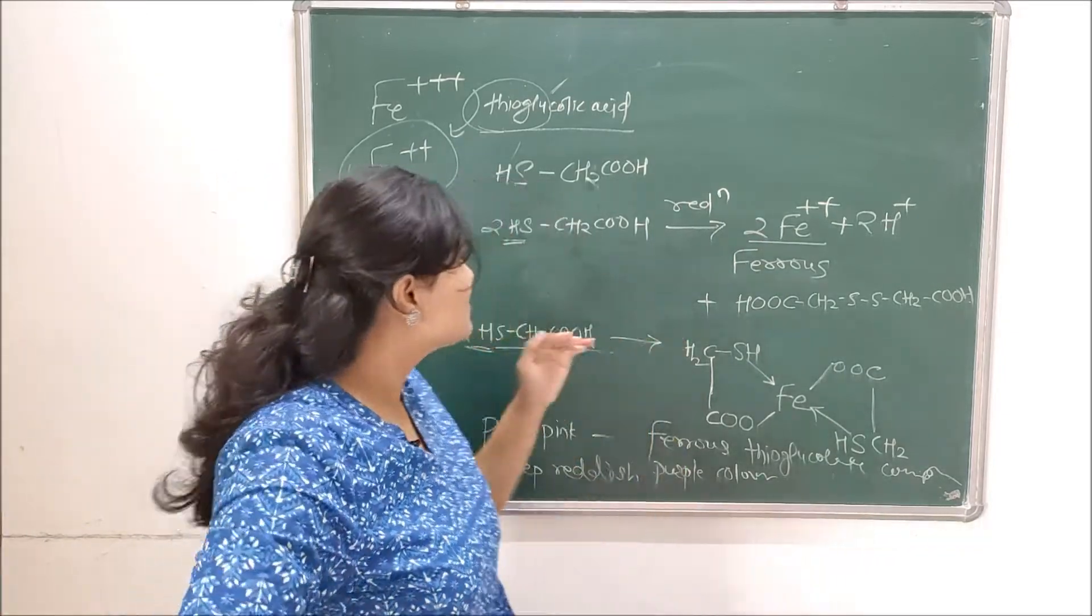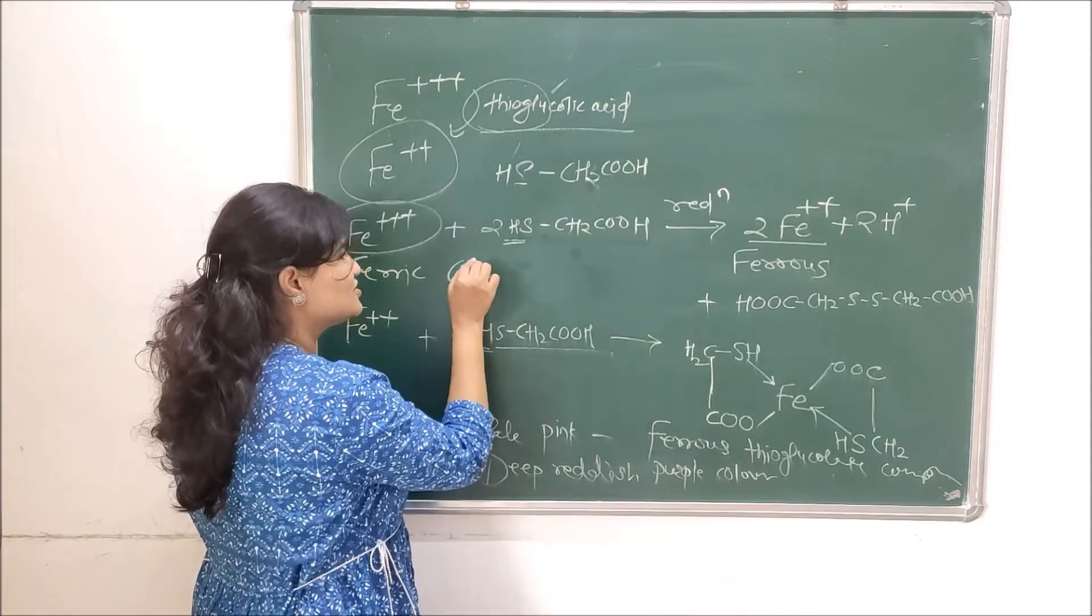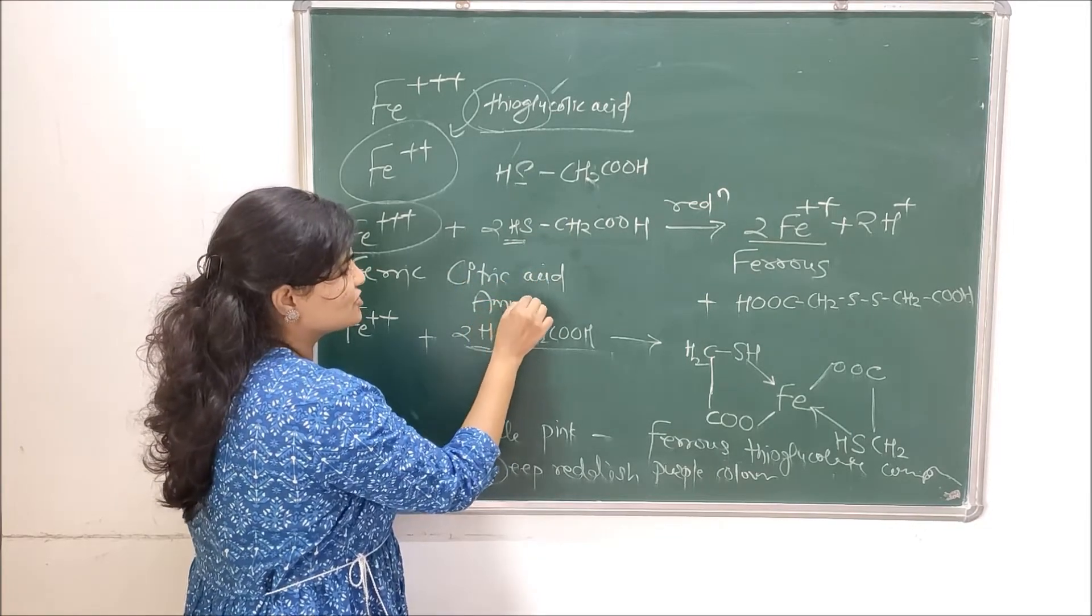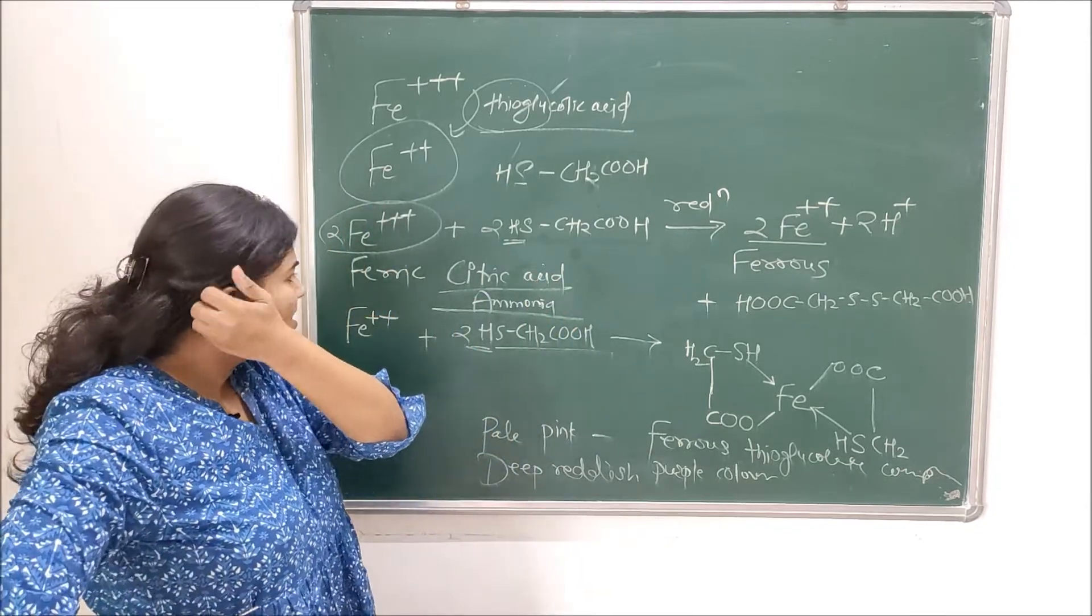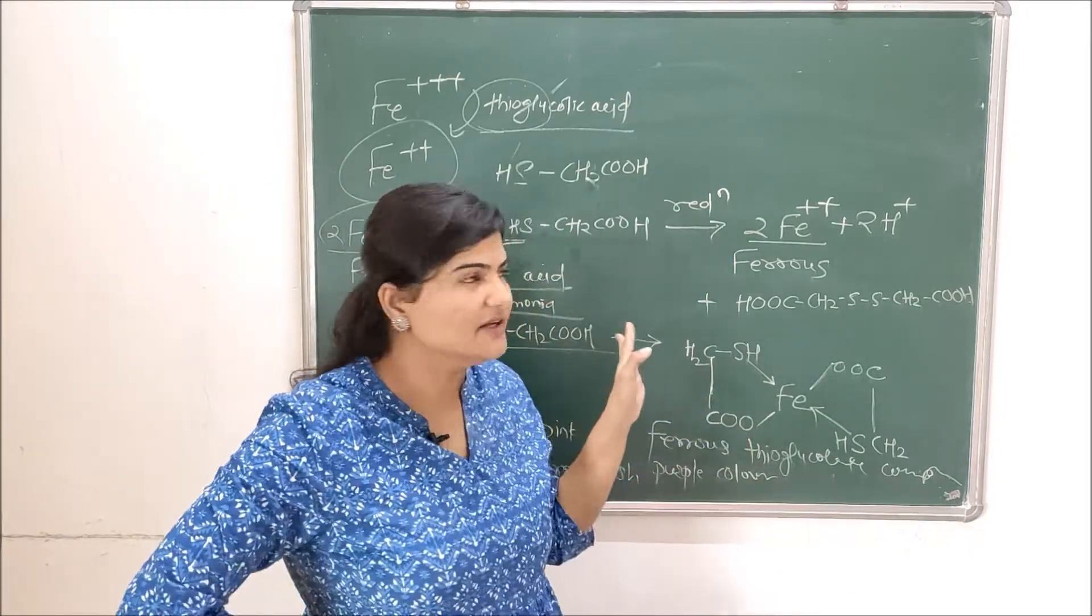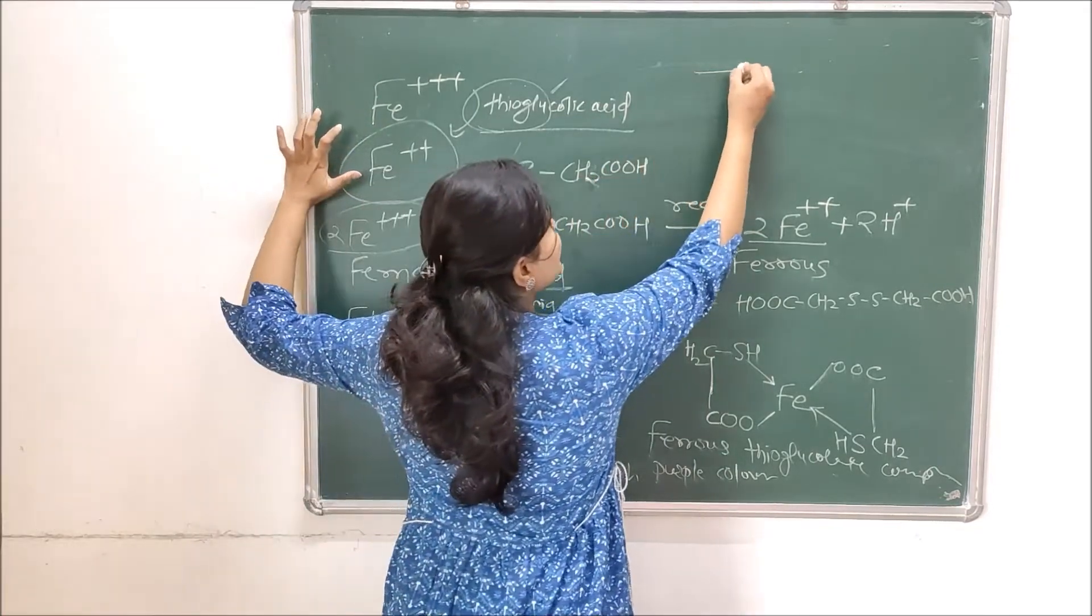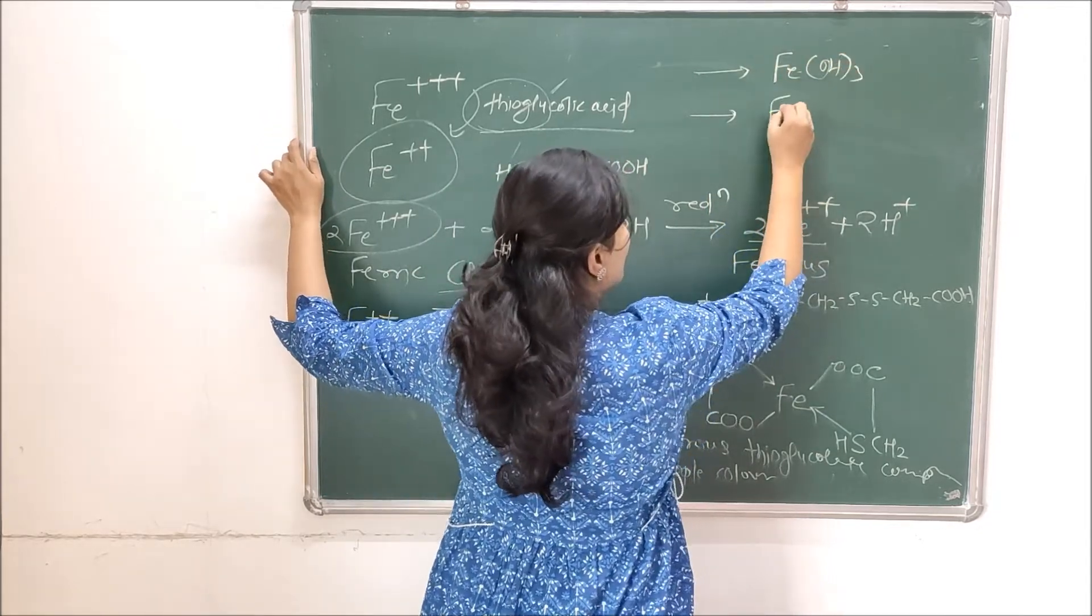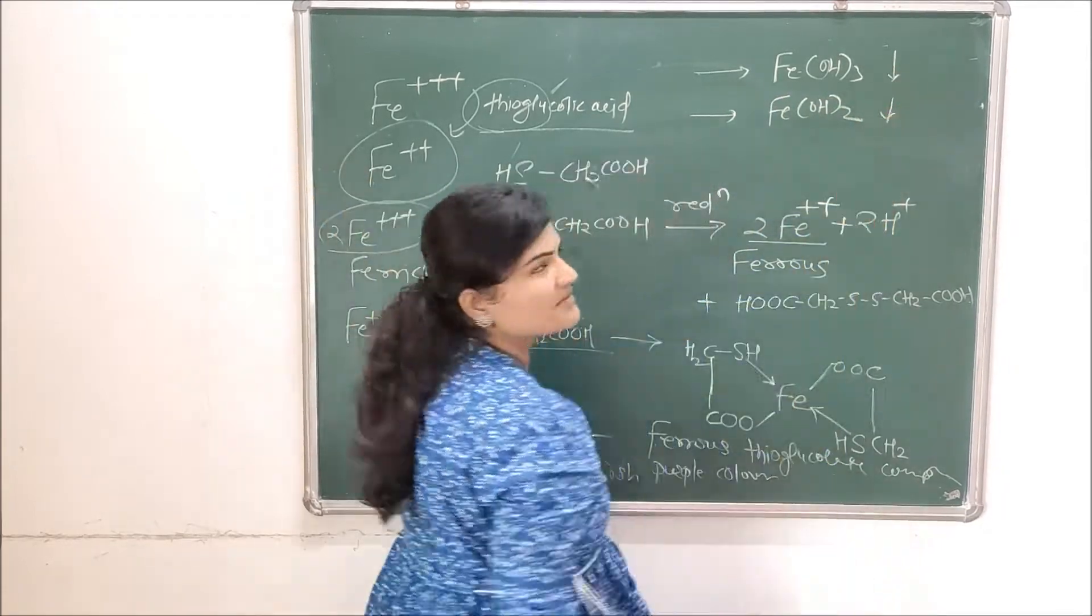This is the basic reaction going on behind the limit test for iron. I'll tell you a few more things. Now I told you initially that this reaction takes place in the presence of citric acid made alkaline with ammonia solution. Now what is the role for both of these? See, if I am adding ammonia solution to iron, be it ferric or ferrous, in the presence of ammonia they are going to form their hydroxides like Fe(OH)₃ or Fe(OH)₂, and these are forming precipitates.